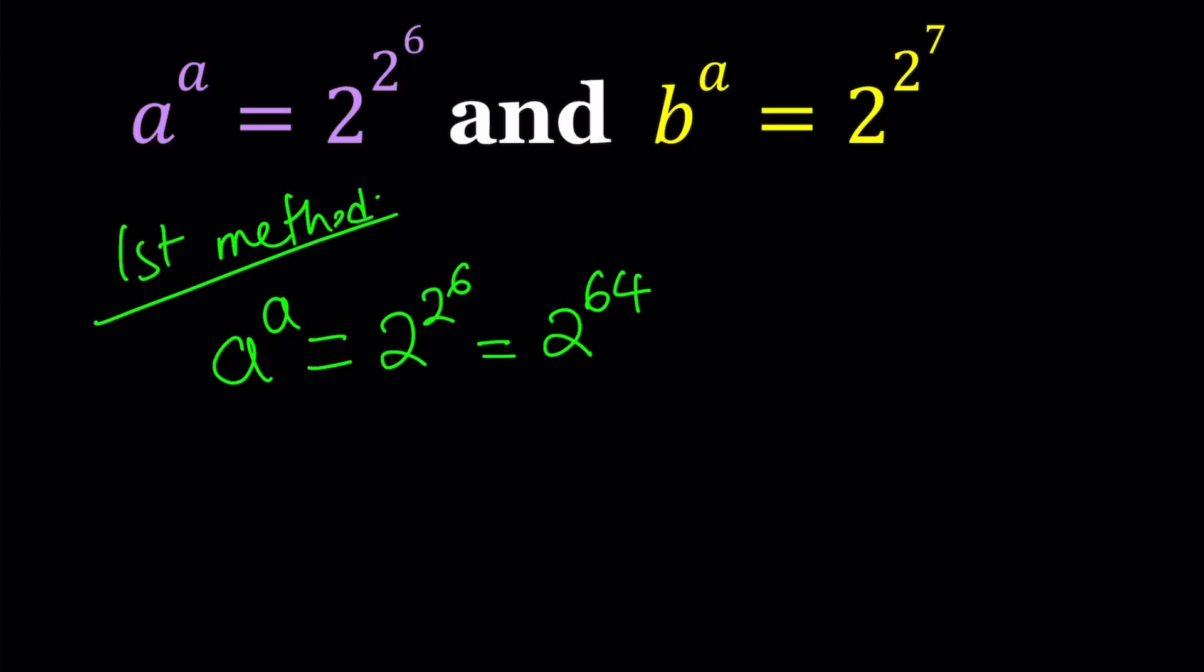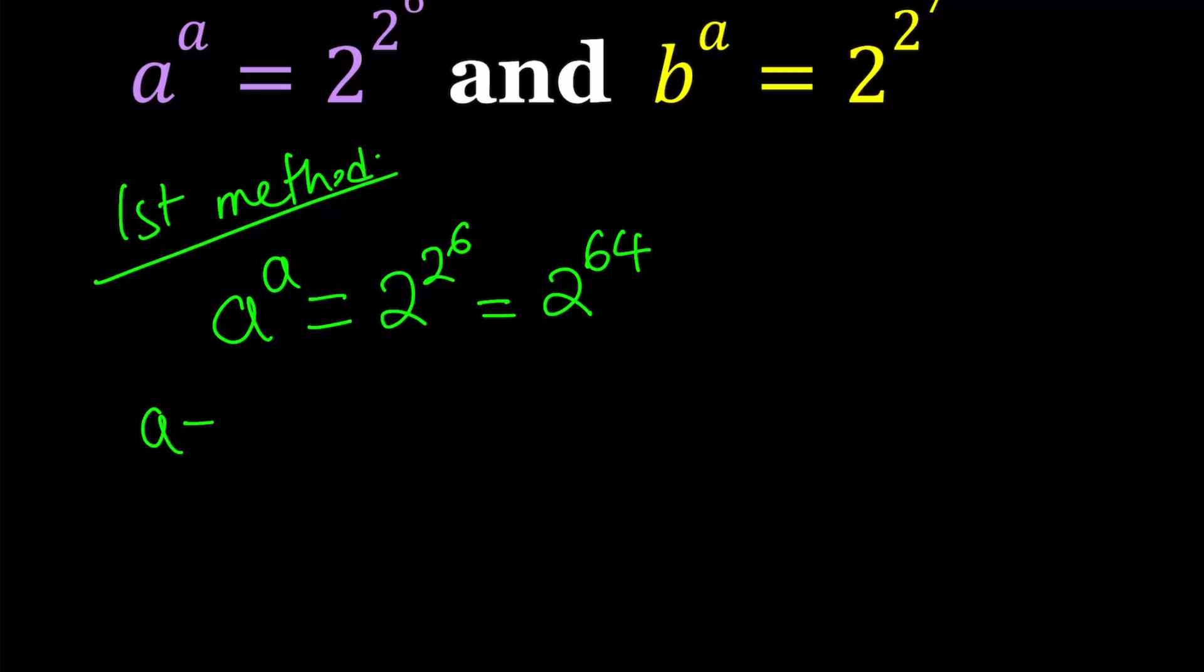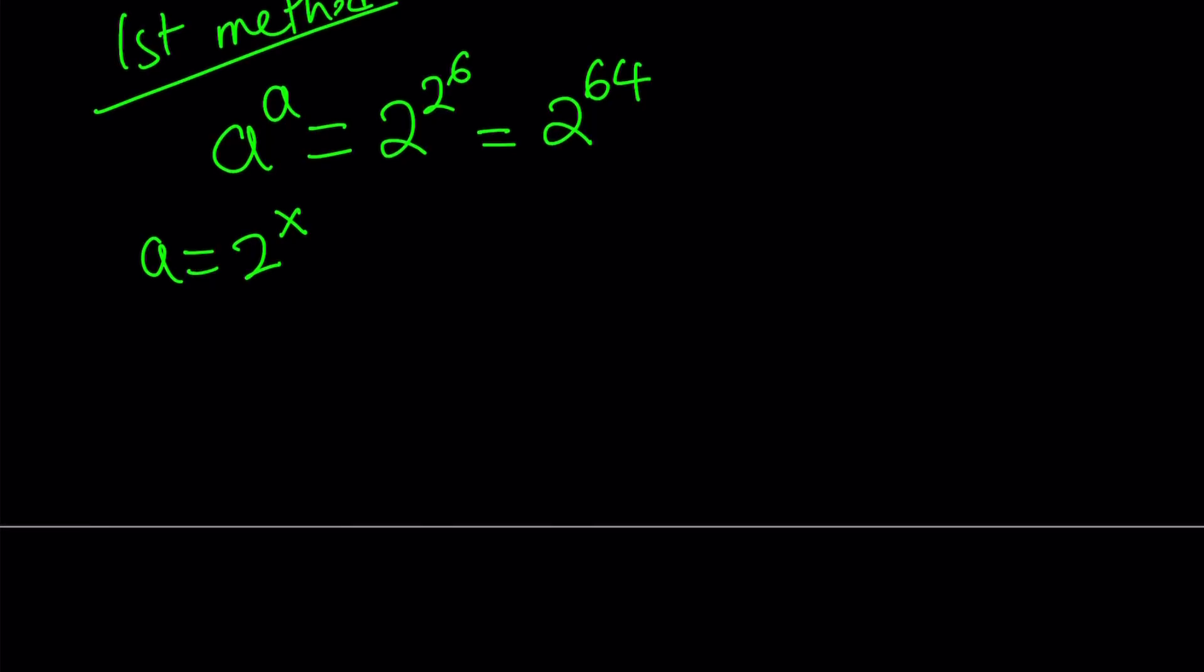Now, suppose a is equal to a power of 2. Why am I thinking that? Because if the base is a power of 2 and the exponent is a power of 2, hopefully we're going to come out with a power of 2. So let's go ahead and replace a with 2^x, and let's see what happens.